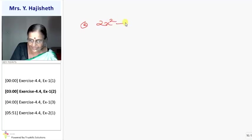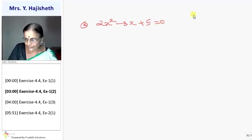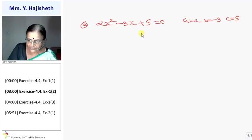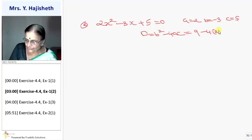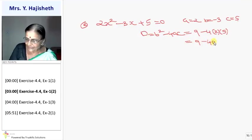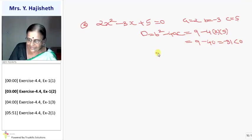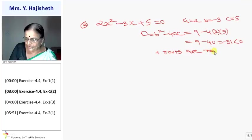Second equation: 2x² − 3x + 5 = 0. Here A is 2, B is minus 3, C is 5. First we find out D, that is B² − 4AC. That is 9 − 4×2×5. So it is 9 − 40 = −31, which is less than 0.